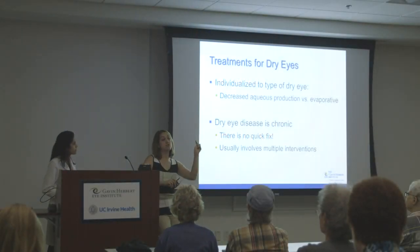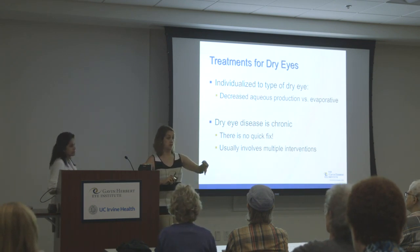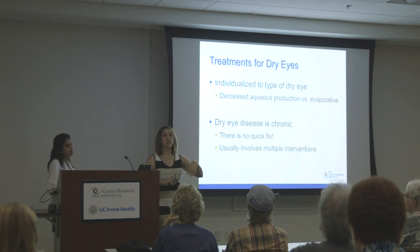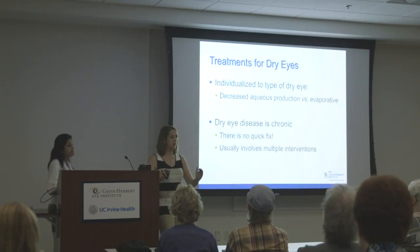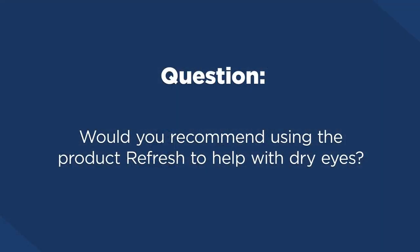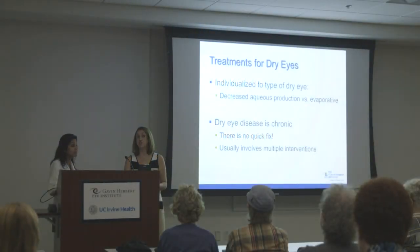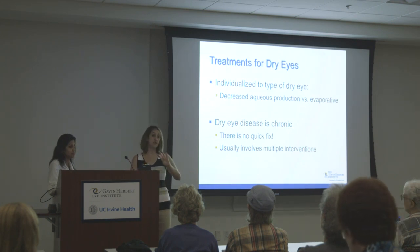Those are the ducts that drain tears into the nose. Sometimes we'll put plugs in — plugs are a treatment for dry eyes that I save for later. We used to think dry eye disease was a volume issue, but we've found it's actually the tear composition that's the problem. Sometimes after correcting the composition, if I'm still looking for more volume, I'll plug the ducts. If the plugs fall out, we can cauterize or suture them closed.